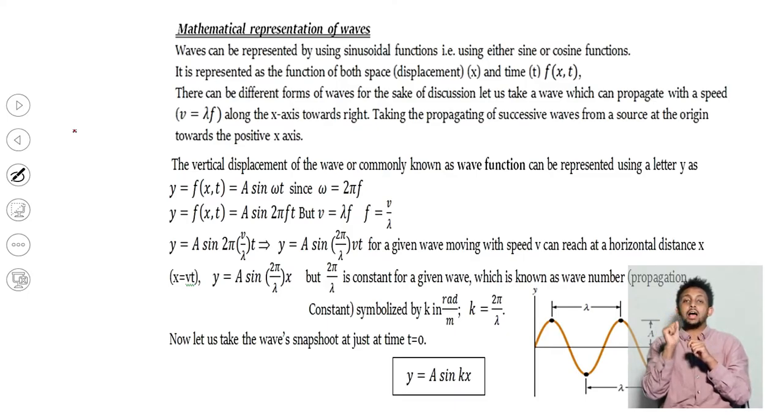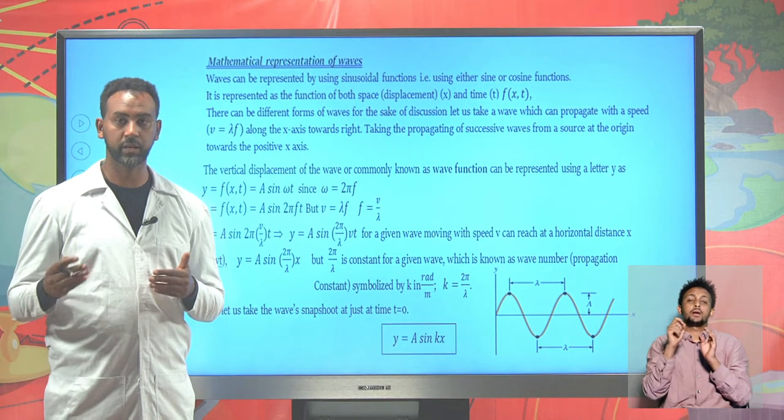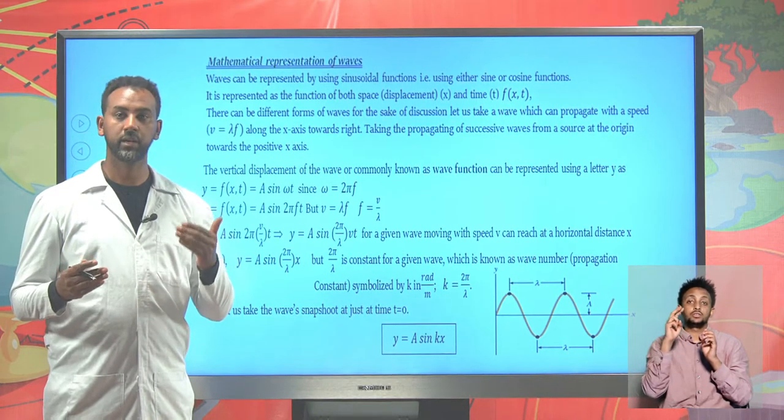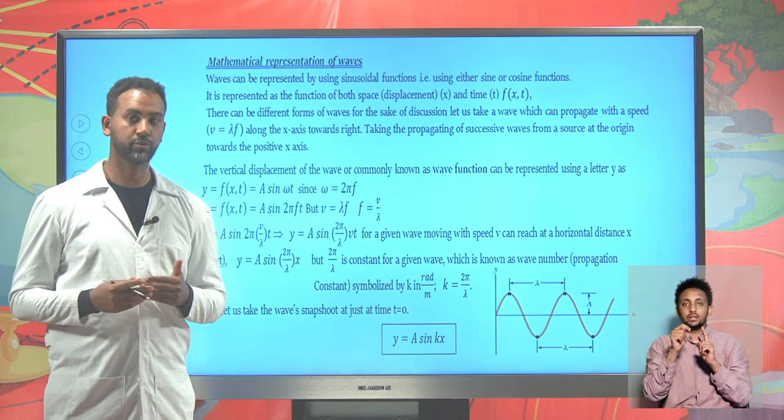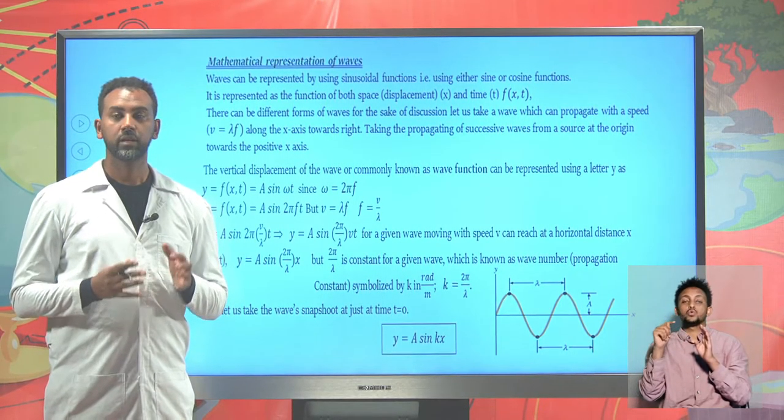And for acceleration it is possible to have negative ω² A sin(ωt) and negative ω² A cos(ωt).